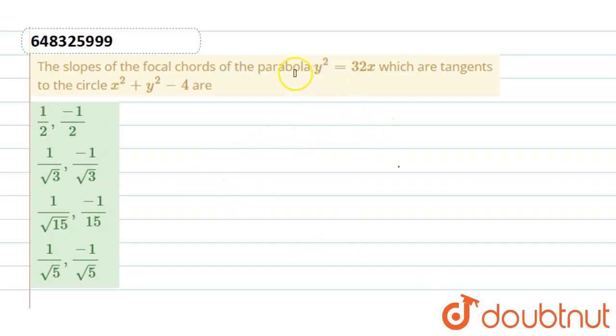The parabola y² = 3x, which are tangents to the circle x² + y² = 4. Find the slopes of the focal chords.